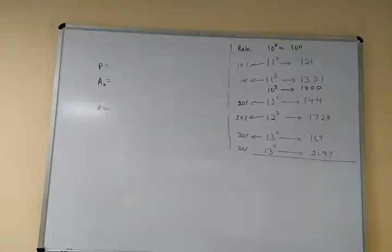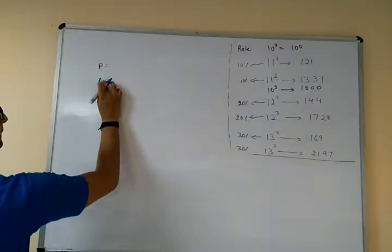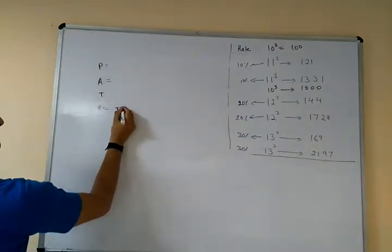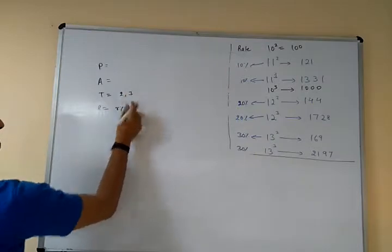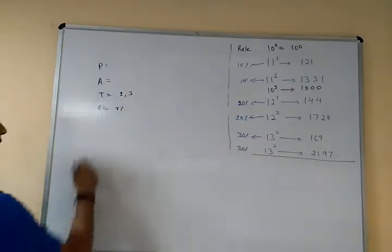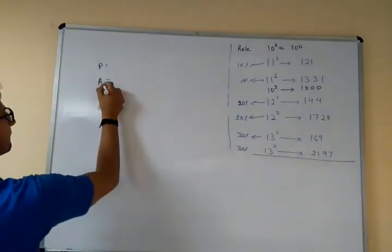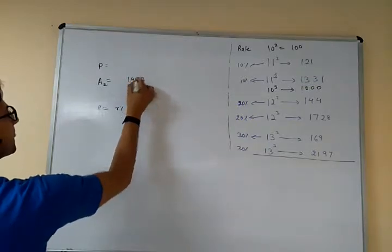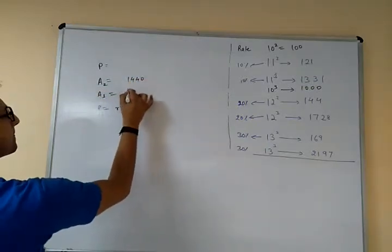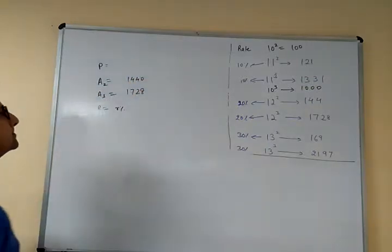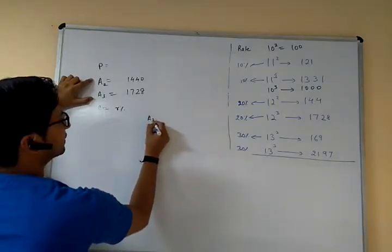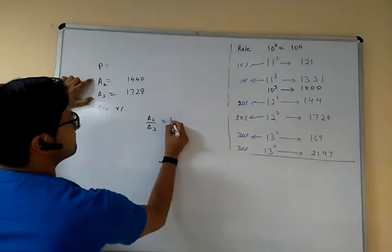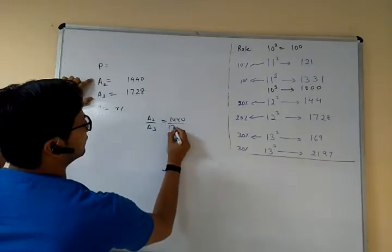A certain amount of money at R% compounded annually becomes Rs. 1440 after 2 years and Rs. 1728 after 3 years respectively. Let A2 = 1440 and A3 = 1728.